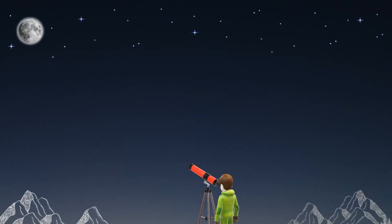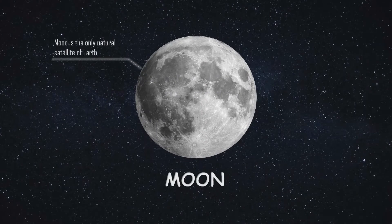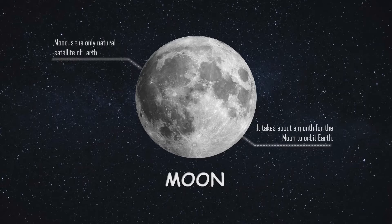When we look at the dark sky, the largest object that appears to us is the moon. The moon is the only natural satellite of the earth and it revolves around the earth in a fixed orbit. It takes about a month — specifically 27.3 days to revolve around the earth, and 29 days to shift from new moon to new moon.